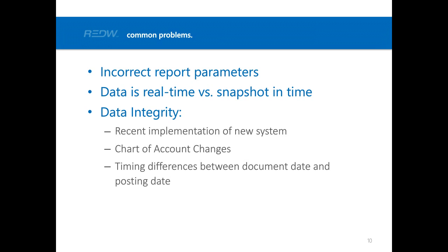Another issue is timing differences between document date and posting date. Many software systems use multiple dates — for example, your invoice date and your check date will often differ. Your posting date of an invoice could be different from your actual effective date. For instance, if you've closed a year and a vendor sends you an invoice months later, you may not want that invoice to post to your old audited fiscal year, resulting in a timing difference between invoice date and document date.